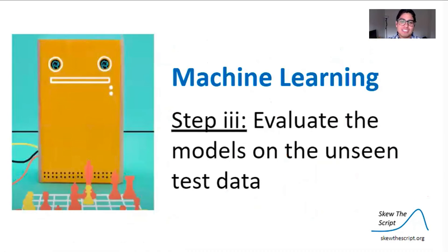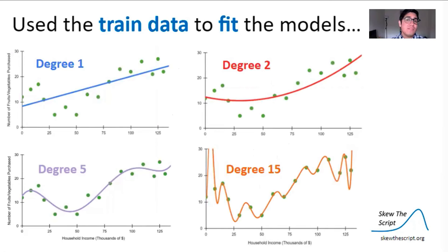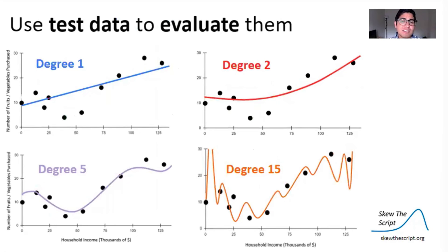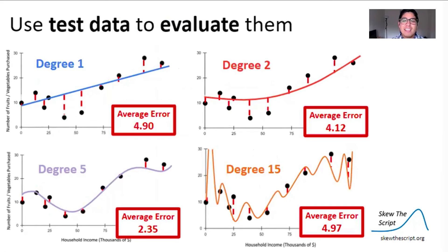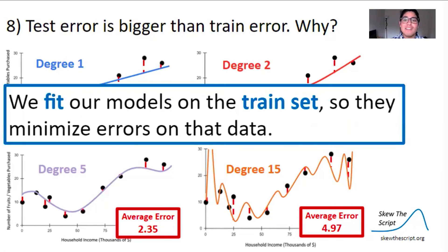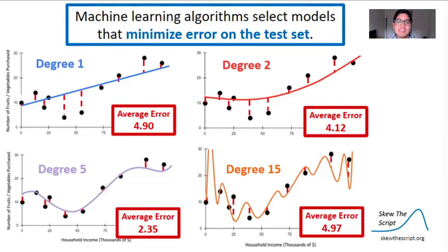The next step in machine learning is to bring that test dataset back to evaluate the models. We used the train data to fit the models, and now we'll use the test data to evaluate them. Let's remove the training set and see if the models are still good at their jobs. I'm definitely seeing red dotted lines in the degree-15 model this time. The average error for the degree-5 model is now lower than the degree-15 model. In general, the test error is bigger than the train error because we fit our models on the train set to minimize error on that data.